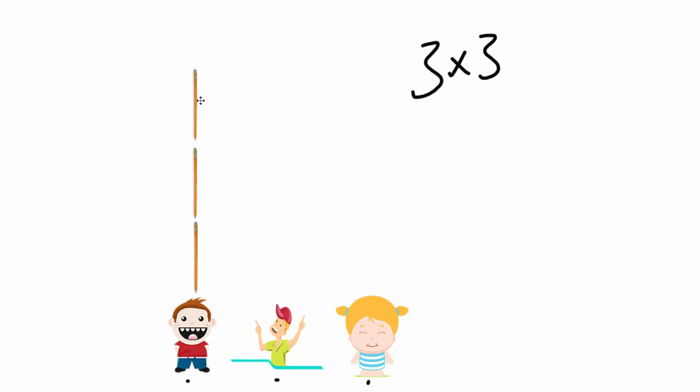So this kid gets a group of three, that kid gets a group of three, and that kid gets a group of three. So I gave out three pencils, and I gave them out three different times. Three times three is nine.